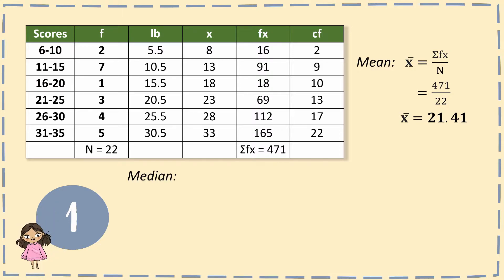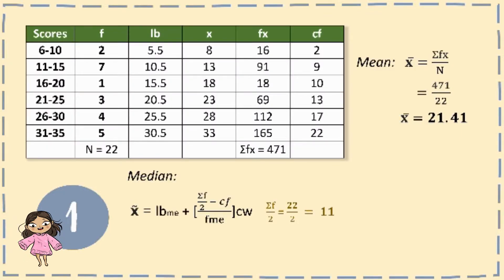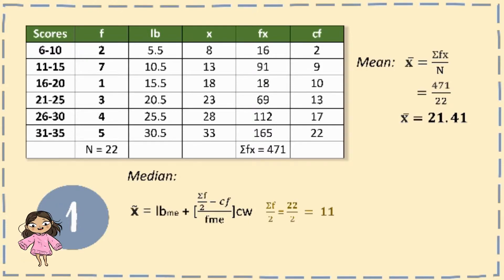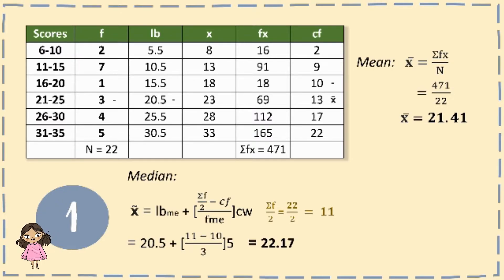For the median, we use the median formula. First, we find the value of the summation of f over 2 to determine the median class: 22 divided by 2 is 11. Next, we look for the cf value equal to or greater than 11 — that is 13. So we have cf of 10, f of 3, lower boundary of 20.5, and class width of 5, because there are 5 values in each score interval.